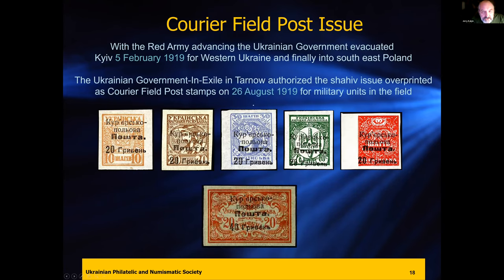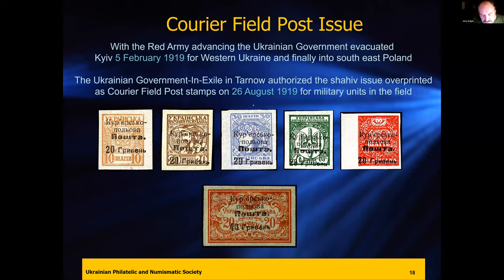Going back to history — there were significant battles occurring with Russia trying to take over Ukraine while the Ukrainian National Republic was being formed in Kyiv. They were advancing from the east toward Kharkiv. At the same time, the government in Kyiv was forced out of the capital and had to start moving westward toward Poland, going through a variety of cities. By August 26, 1919, the government in exile was in Tarniv. They were still issuing stamps in expectation that they would eventually be able to return to Ukraine.